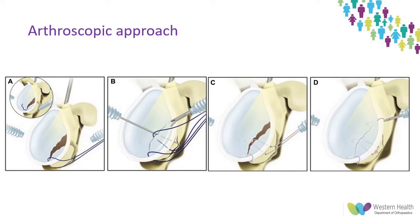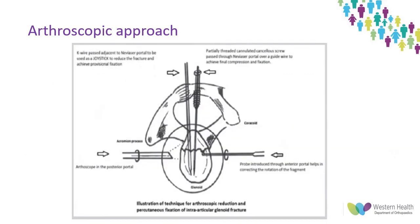This shows Driscoll's arthroscopic transosseous suture anchor technique for larger bony Bankart lesions. It uses a suture anchor placed at the 5 o'clock point in the inferior glenohumeral ligament for initial control. An anchor is then passed through the fracture into the glenoid subchondral bone, with suture limbs passed through drill tunnels in the bone fragment. Another anchor provides stabilisation at 2:30 and then the sutures are tightened. This also demonstrates arthroscopic assisted percutaneous fixation for glenoid fossa fracture, using a K-wire as a joystick and a partially threaded cannulated screw to achieve compression across the fracture line.